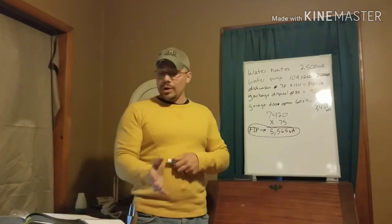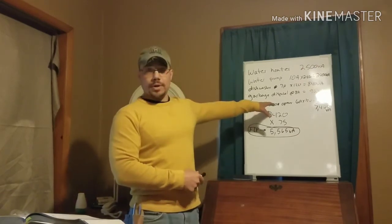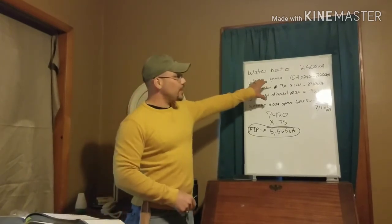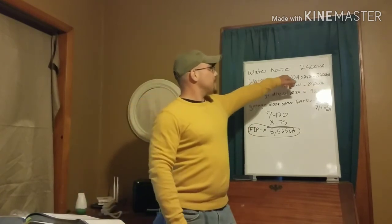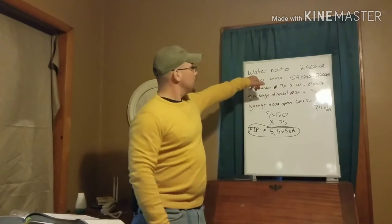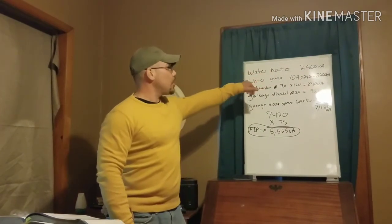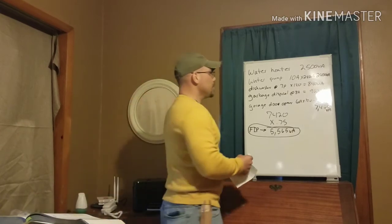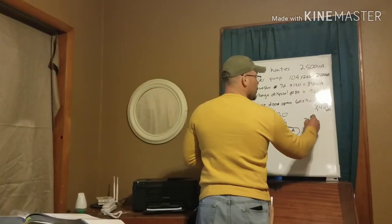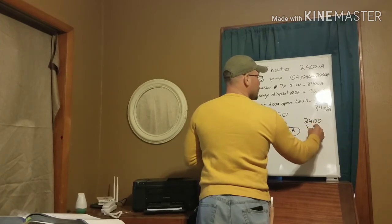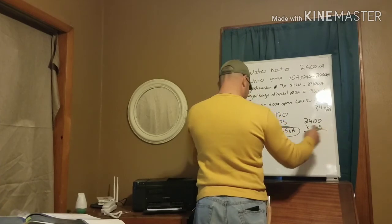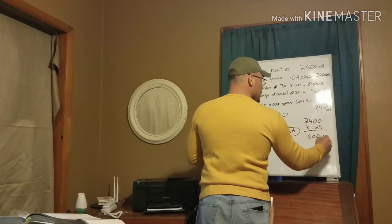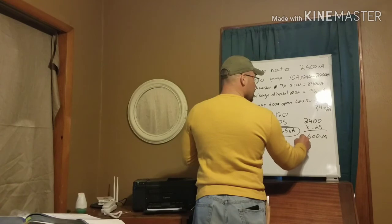The other items in 430.24 have already been incorporated in our calculation. The only thing we haven't accounted for is that 125 percent of the full-load rating of the highest-rated motor — we've already included the first 100 percent with our small appliance loads, so we just need the extra 25 percent. Among our fastened-in-place appliances, the water heater is not a motor, so the highest motor is the water pump at 2,400 VA. We take 2,400 VA times 25 percent, which gives us 600 VA as our largest motor load.